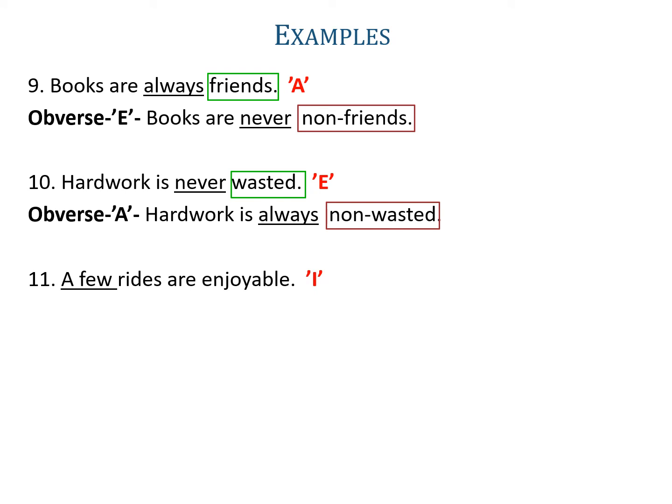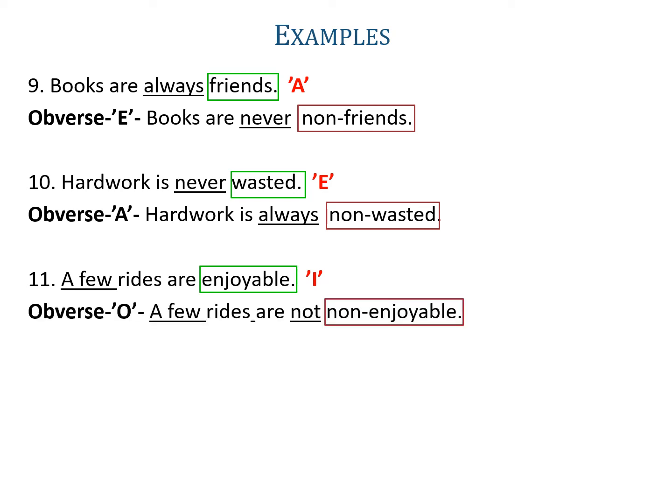Example eleven: 'A few rides are enjoyable.' A few is used in an I-proposition, so it is an I-proposition, and its obverse will be O, where a few not will be used. The predicate is enjoyable, its complementary will be non-enjoyable. So the obverse is 'a few rides are not non-enjoyable'.